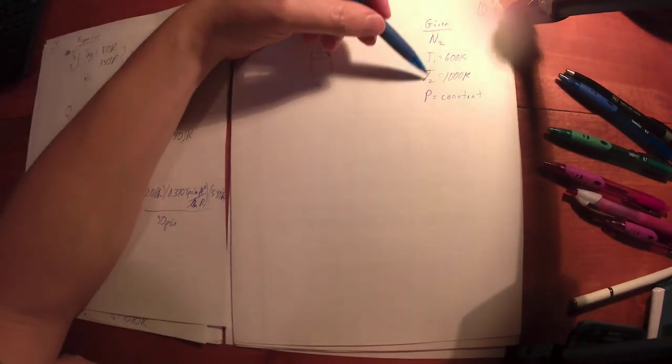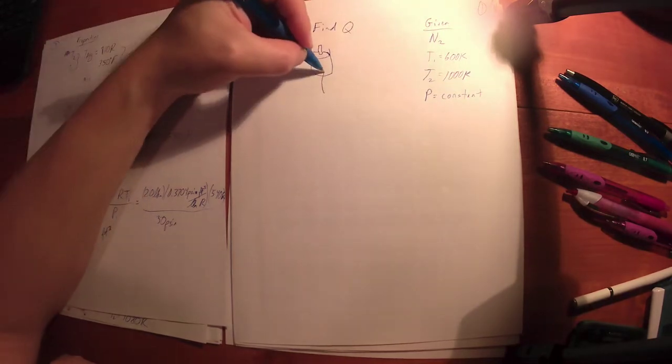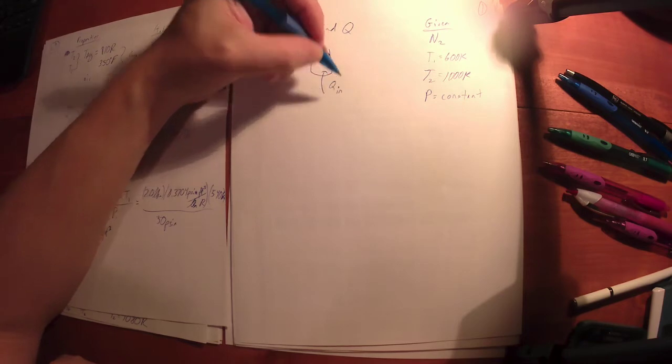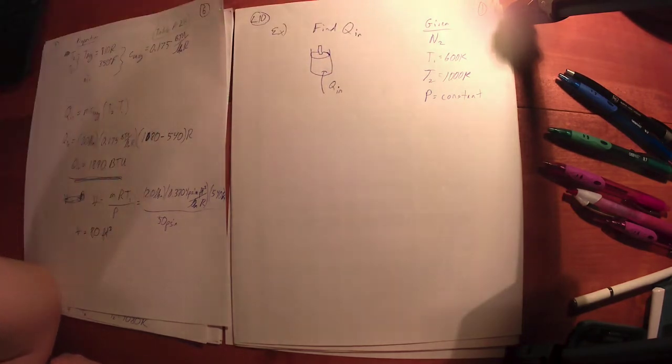What are we looking for? They want you to find the heat. Going from a lower to a higher temperature, most likely that is heat added. They said determine the heat supplied to the nitrogen, so they want you to find the heat in.